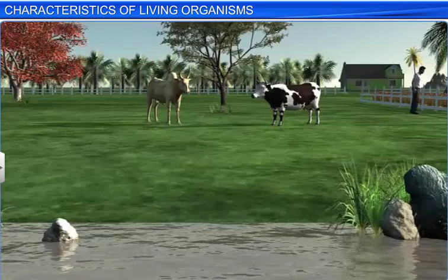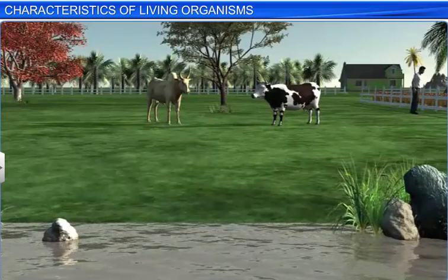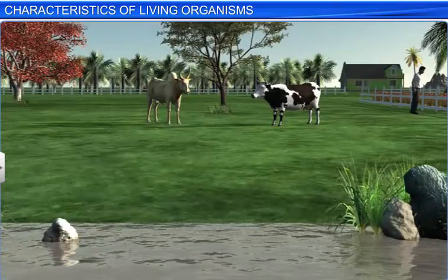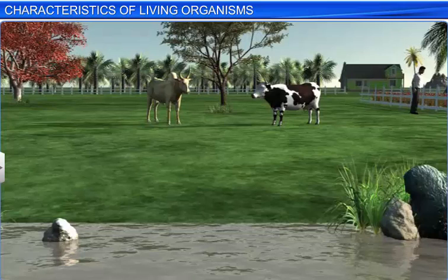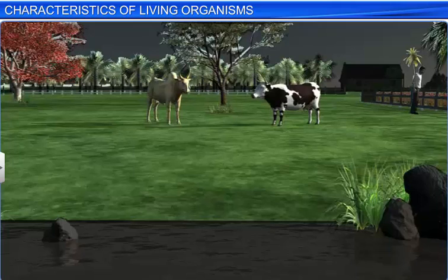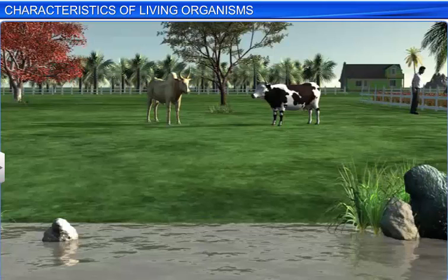The world consists of both the living and the non-living. But how do we segregate the two? We can do so by looking out for certain characteristics associated with living organisms. However, these characteristics can be definitive or non-definitive.